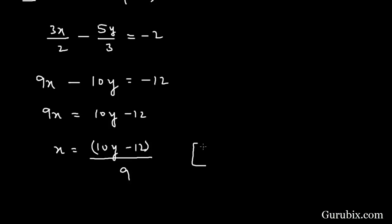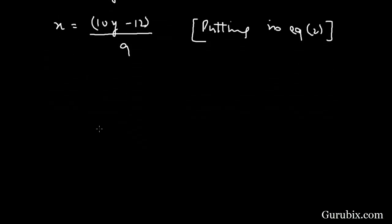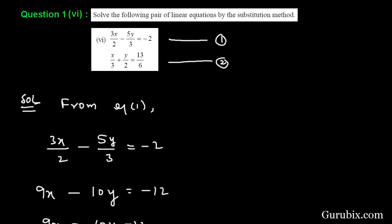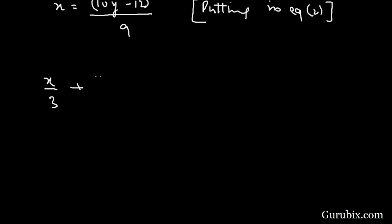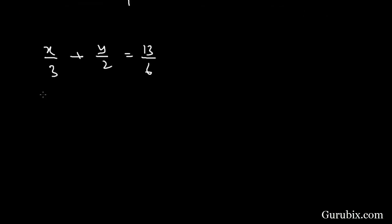And now we shall put the value of x in equation number 2. And equation number 2 is x over 3 plus y over 2 equals 13 over 6. If we multiply both the sides by 6 then it will be 2x plus 3y equals 13.